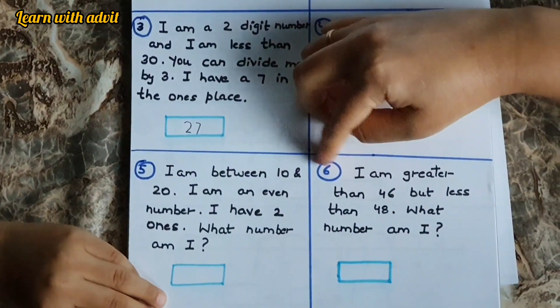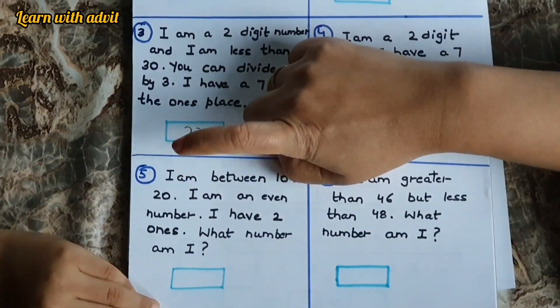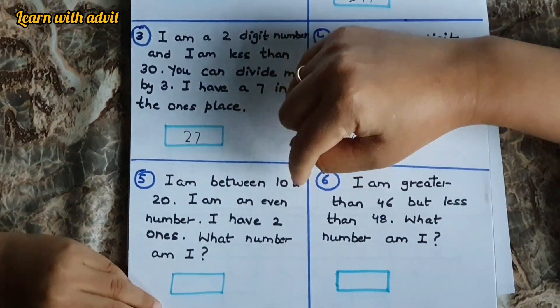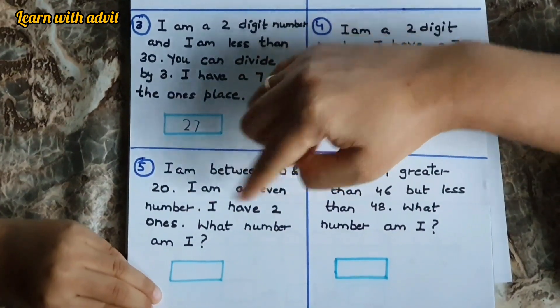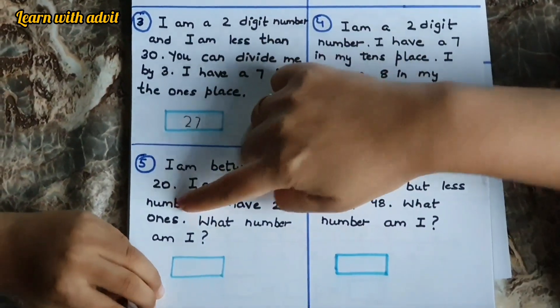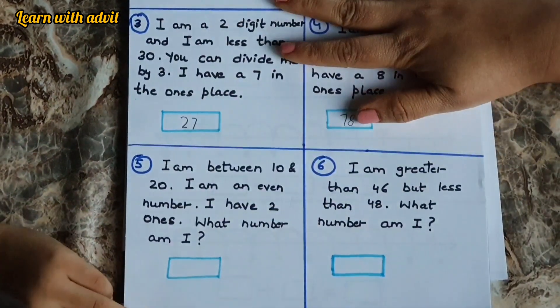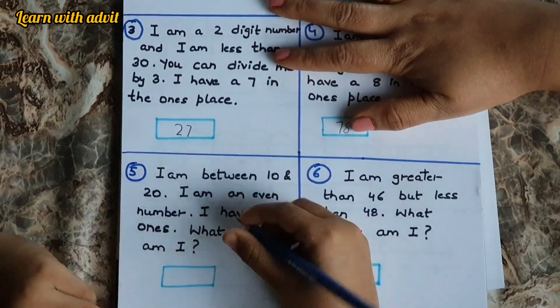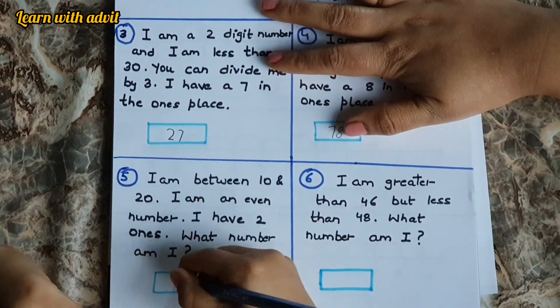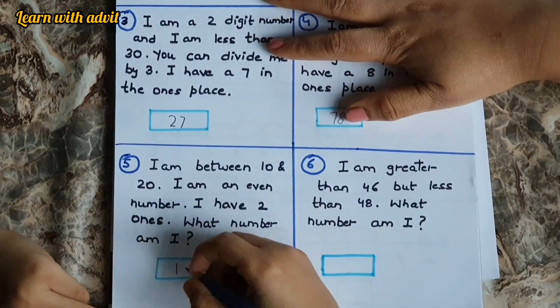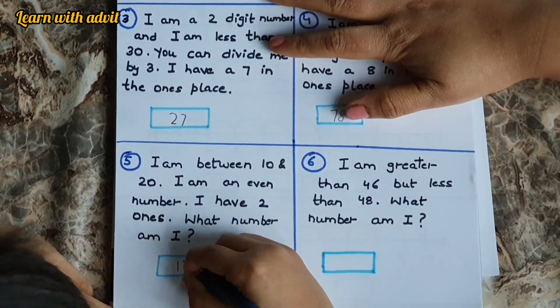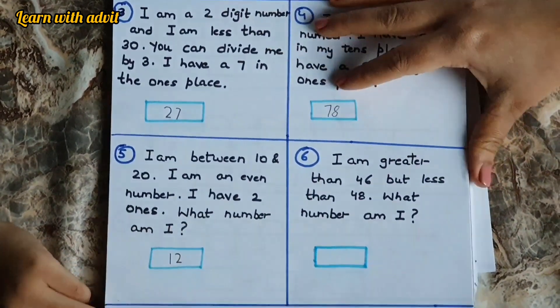I am between 10 and 20. It's a 2 digit number and it comes between 10 and 20. I am an even number. I have 2 ones. What number am I? Number is 12. Because it comes between 10 and 20 and it's an even number.